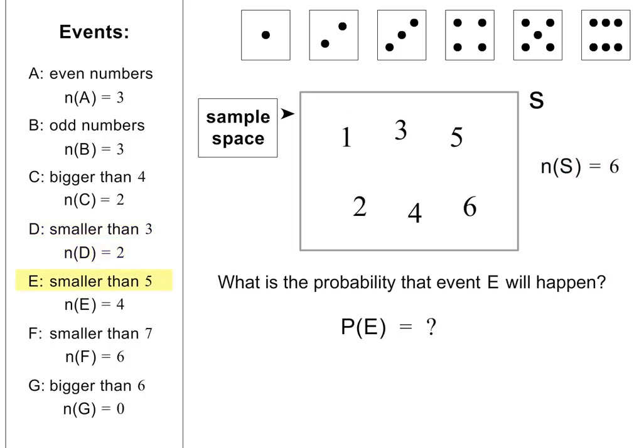What is the chance of getting a number smaller than 5? To calculate this, we need to divide N(E) by N(S). N(E) equals 4 and N(S) equals 6. The probability is therefore 4 out of 6, or 2 thirds.